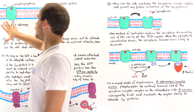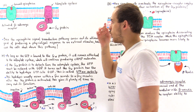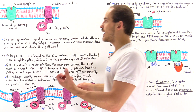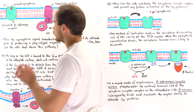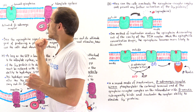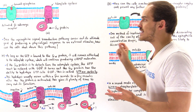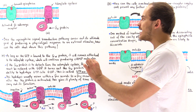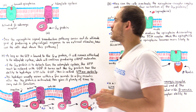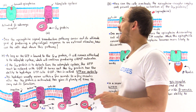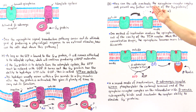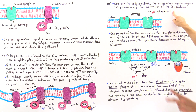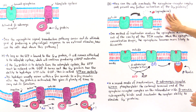Now let's move on to Point B — the second point in the pathway where the cell can deactivate the pathway. This is where epinephrine is bound to the beta-adrenergic receptor. The function of this epinephrine-receptor complex is to stimulate the transformation of the GDP form of the alpha-G protein into the GTP form. The question is: how can the cell inactivate the epinephrine receptor complex and prevent further activation of the alpha-G proteins? There are two different ways.